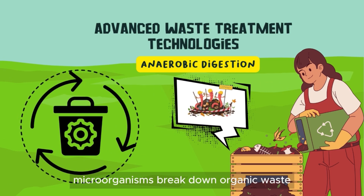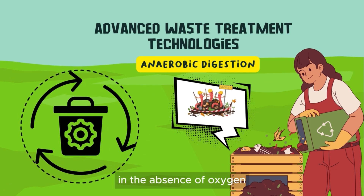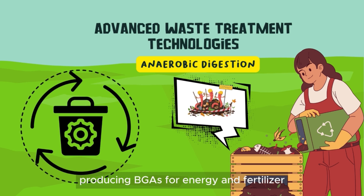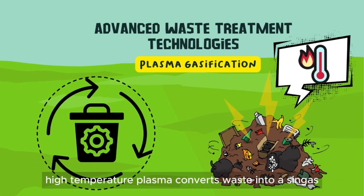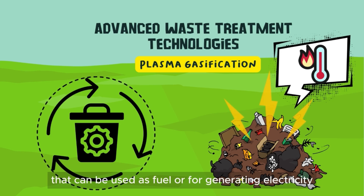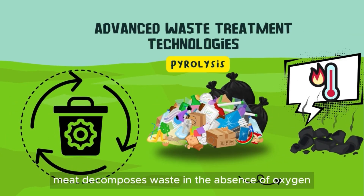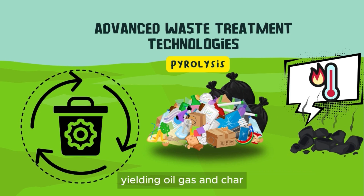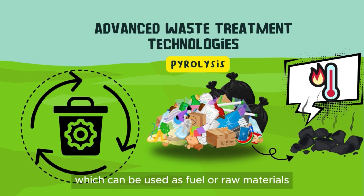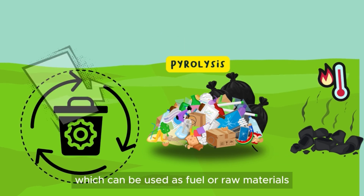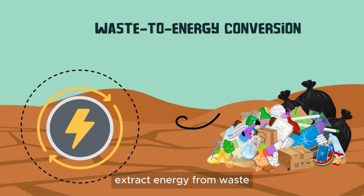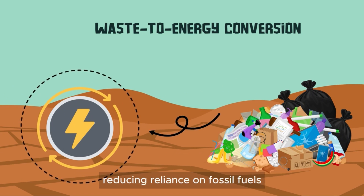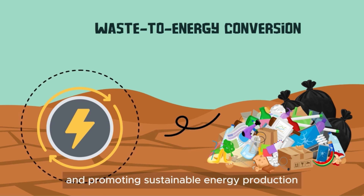Microorganisms break down organic waste in the absence of oxygen, producing biogas for energy and fertilizer. High-temperature plasma converts waste into a syngas that can be used as fuel or for generating electricity. Pyrolysis decomposes waste in the absence of oxygen, yielding oil, gas, and char which can be used as fuel or raw materials. These waste-to-energy conversion technologies extract energy from waste, reducing reliance on fossil fuels and promoting sustainable energy production.